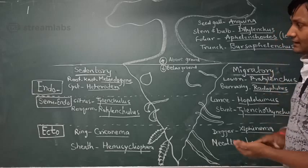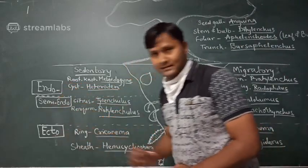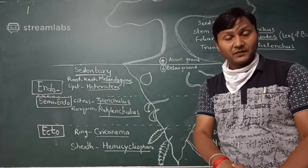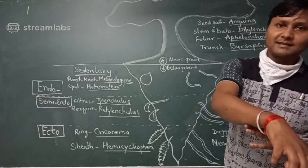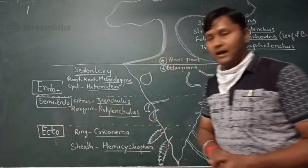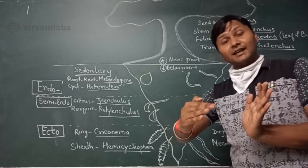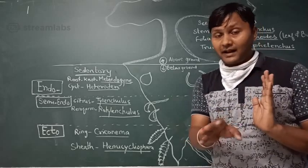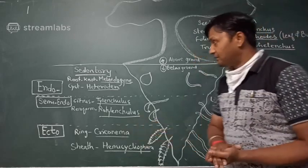Below ground nematodes are further divided into three categories: endoparasitic, semi-endoparasitic, and ectoparasitic. Endoparasitic means the whole body of the nematode is within the plant tissue. Semi-endoparasitic means only the neck or head region is within the plant system and the remaining body is outside. Ectoparasitic means the body remains outside the plant — only the stylet enters the plant system for feeding.